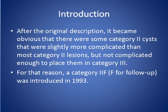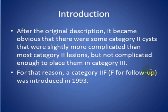In 1993, after the original description, some category of renal cysts — category 2 — were found to be more complicated. He introduced a category between category 2 and category 3, and he called it category 2F.